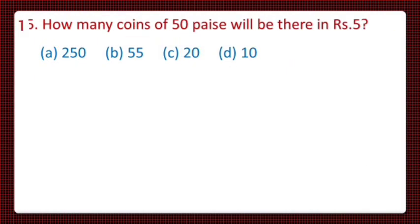Next, question number 15 is: how many coins of 50 paise will be there in rupee 5? And 4 options are given. Option A is 250, Option B is 55, C is 20, and D is 10.